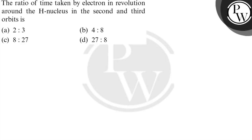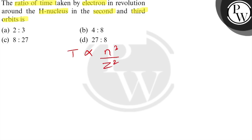Hello, we have been given a question. The ratio of time taken by an electron in revolution around the hydrogen nucleus in 2nd and 3rd orbits, as per Bohr's model. The time of revolution is directly proportional to n cubed upon Z squared.